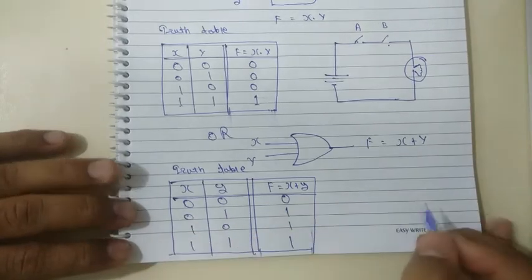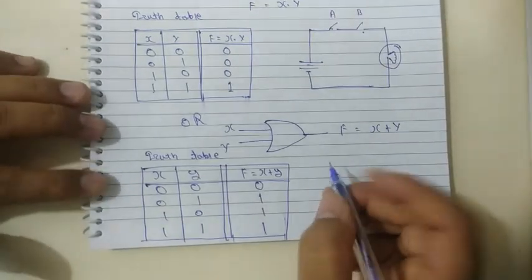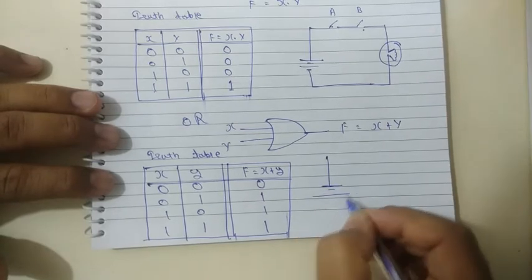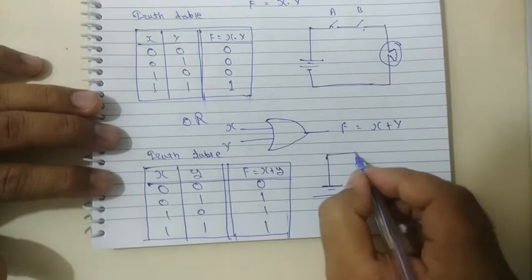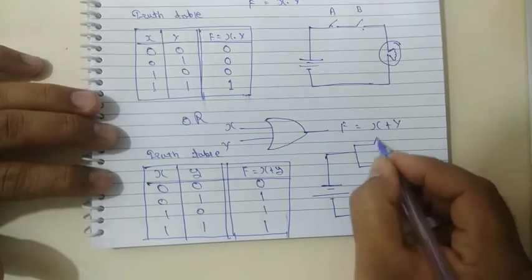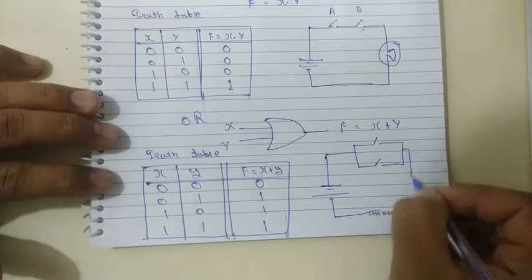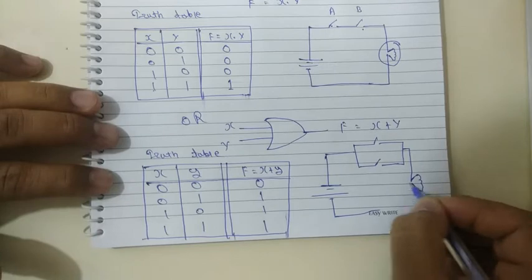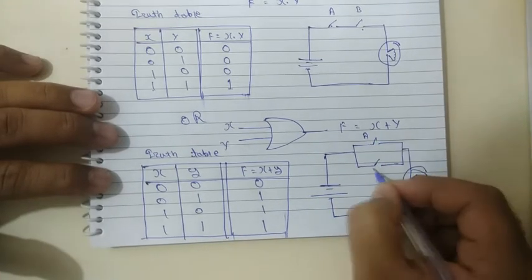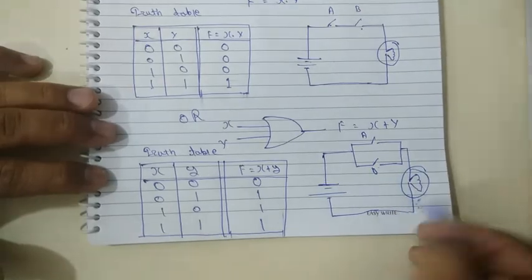For the electrical equivalent circuit of the OR gate, we have a parallel connection of two switches A and B with a lamp. The lamp will glow when either A or B is closed.